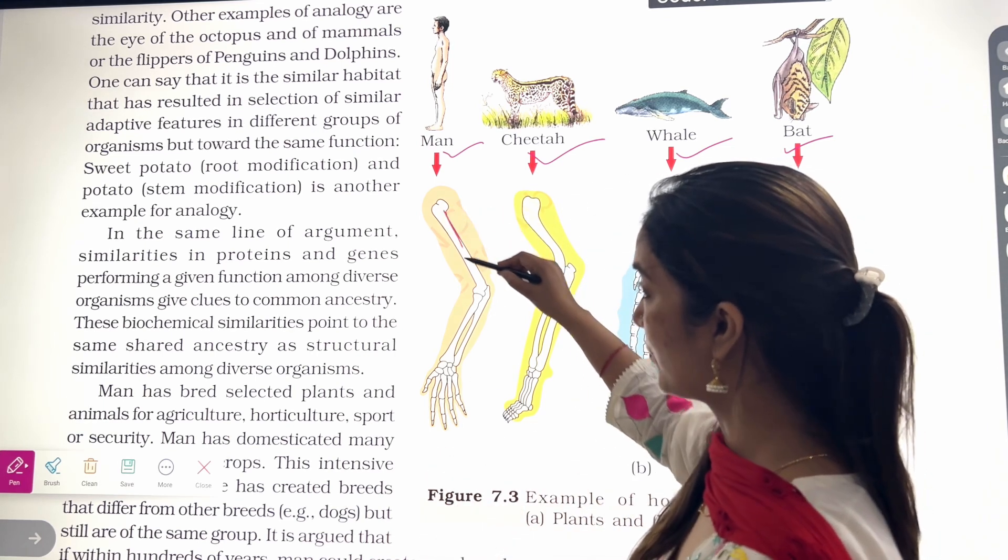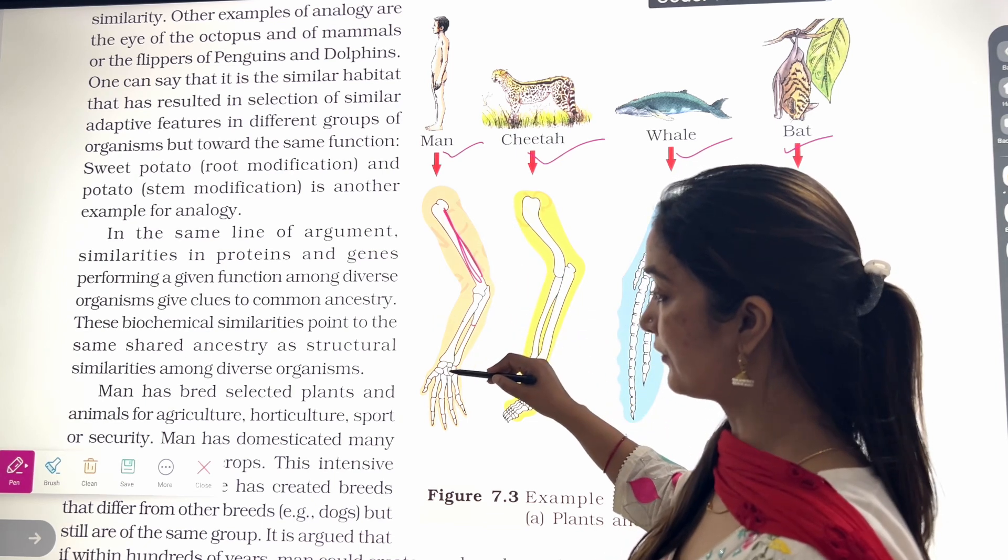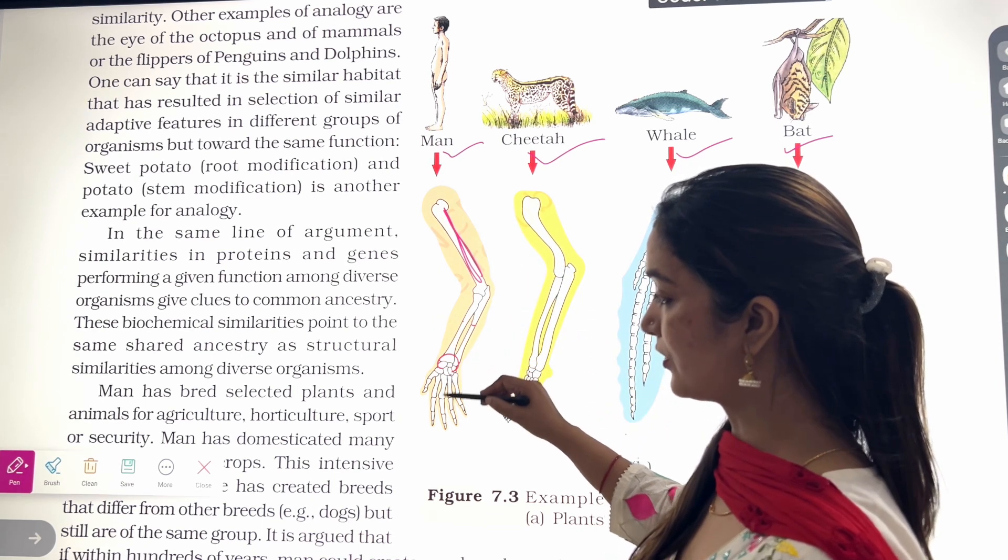the upper bone is called humerus. It is called radius and ulna. And then you can see the carpals and metacarpals, and these are phalanges.